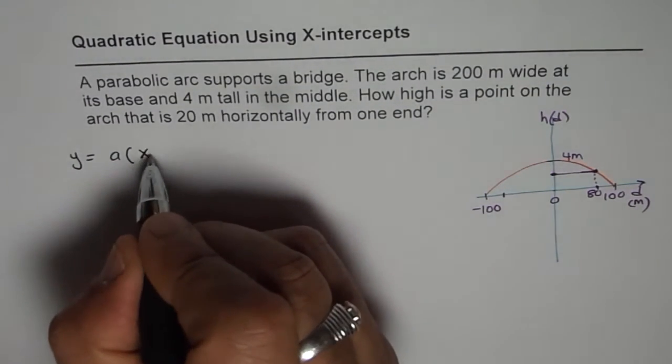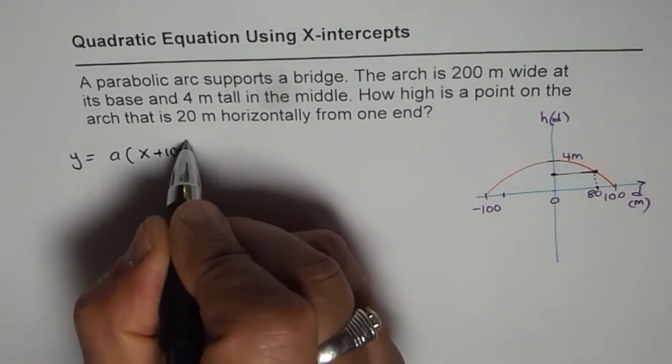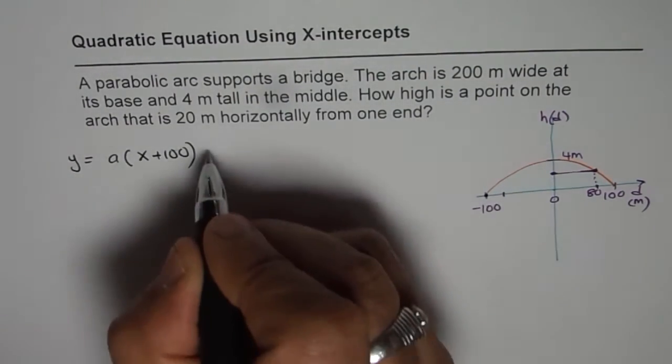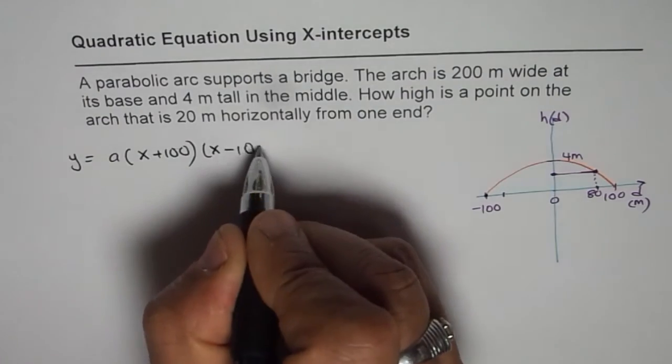The equation could be y equals a times the two intercepts, which is (x + 100) times (x - 100). To find the value of a, we can write 0 and 4 for the maximum.